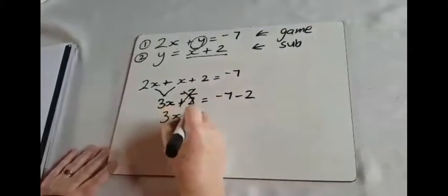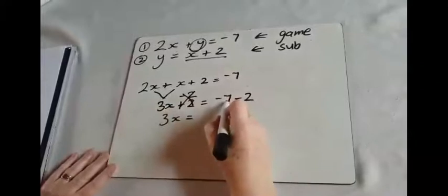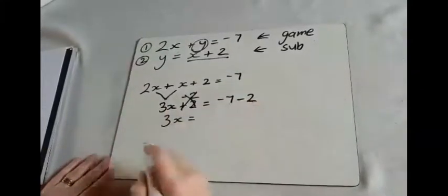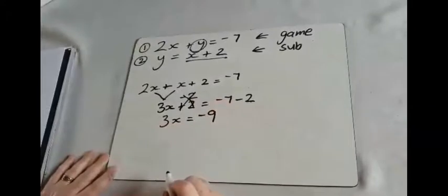And we've now got 3x equals. If you're at negative 7 on the number line and then you take away another 2, you've got negative 9.